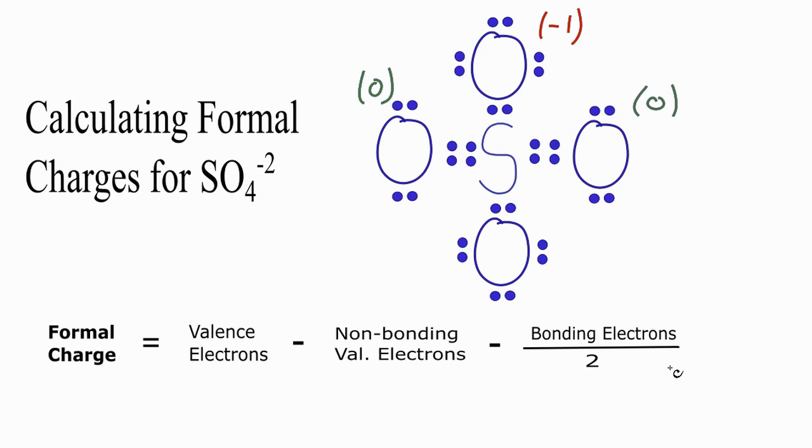For the sulfur atom, if you look on the periodic table, it's in group 6A, or 16, so it has six valence electrons. And we're going to subtract the non-bonding electrons. For sulfur, all of the electrons are involved in chemical bonds. So we put a 0 there.